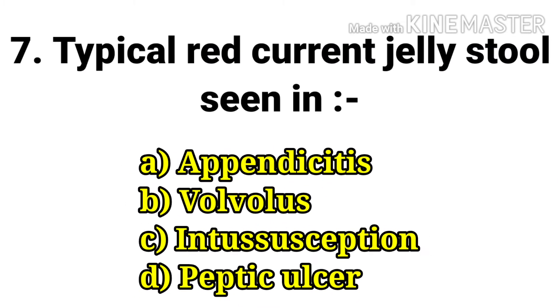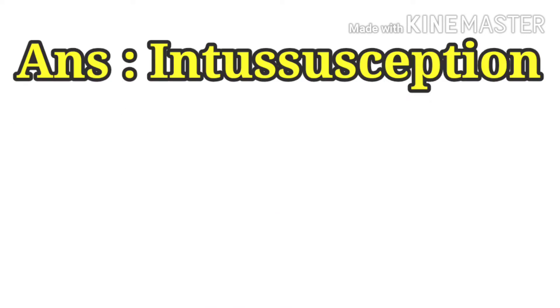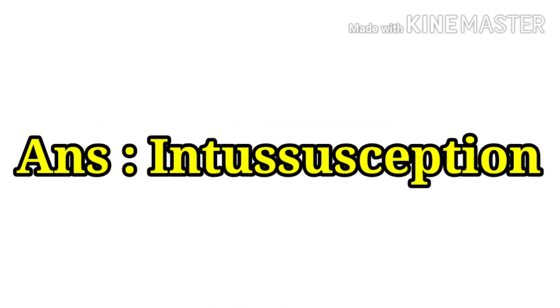The next question: typical red currant jelly stool is seen in — options are appendicitis, volvulus, intussusception, and peptic ulcer. The answer is intussusception.